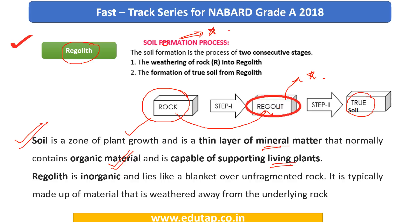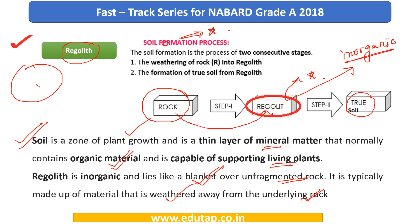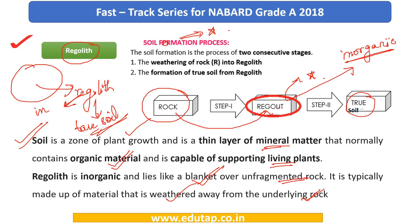Regolith, importantly, is basically inorganic — this is a key point to keep in mind. When rocks are weathered, regolith is formed, which is essentially a blanket over unfragmented rock, typically made up of material weathered away from the underlying rock. So from rock, you first get regolith, and then ultimately true soil — which is capable of allowing plants to grow in it. Unlike soil, regolith contains only inorganic matter.